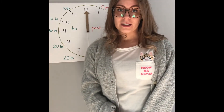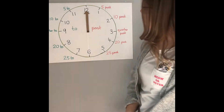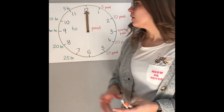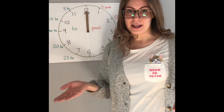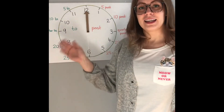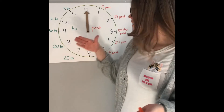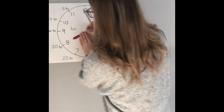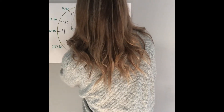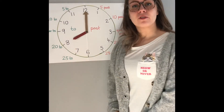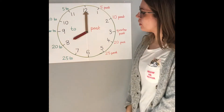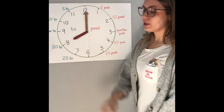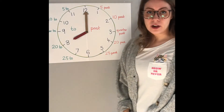So on your worksheet today Y3, you have got lots of different clocks to have a look at — see if you can tell the time. We're going to have a bit of a practice now. I've got a minute hand and we're going to have a go at practising some of the times. Right now, the time is eight o'clock. The minute hand is pointing at the twelve, the hour hand is pointing to the eight — so eight o'clock.